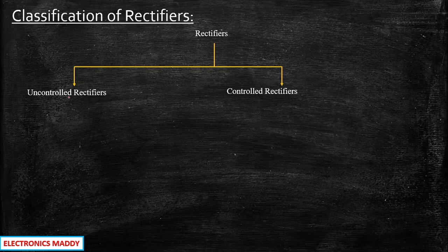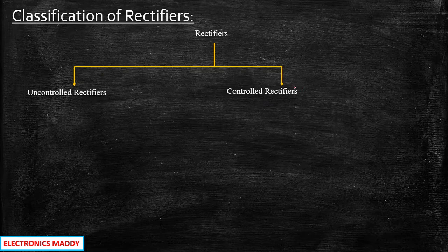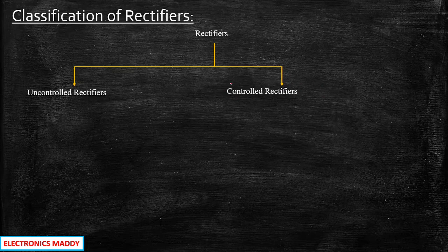An uncontrolled rectifier means we do not have control over the circuit — we will be using diodes. A controlled rectifier means we can control the circuit in terms of output voltage, average voltage, RMS value of output voltage, and many other parameters through SCRs or thyristors. Using the gate terminal of a thyristor, we can control the angle at which the thyristor turns on, which is why these are called controlled rectifiers.